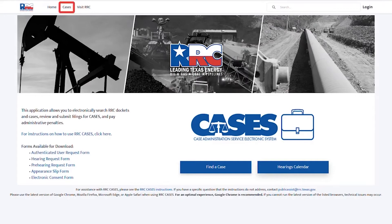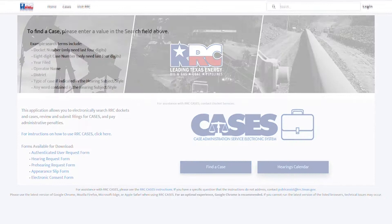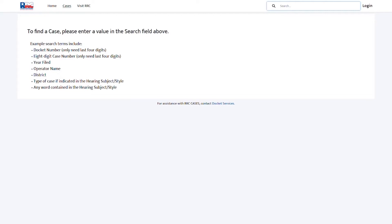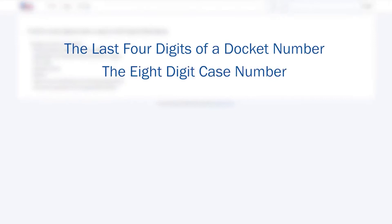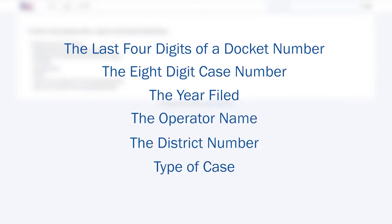To find a case, users may choose Cases at the top of the page or Find a Case on the right-hand side of the screen, which will redirect to the case search portal. Users may find a case by using various search terms like the last four digits of a docket number, an eight-digit case number, the year filed, operator name, district number, type of case, or keywords pertaining to the case.